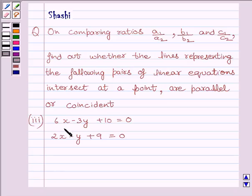The equations are 6x minus 3y plus 10 equals 0 and 2x minus y plus 9 equals 0.